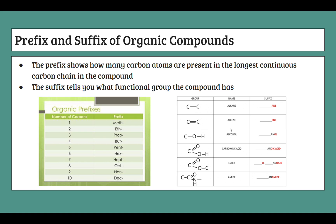Another suffix we need to know is the alkene suffix. It's similar to the alkane one except instead of -ane we have -ene. We can't have a one-carbon alkene because it requires a C=C double bond. So for a two-carbon alkene, we take the prefix eth- and add -ene to get ethene.